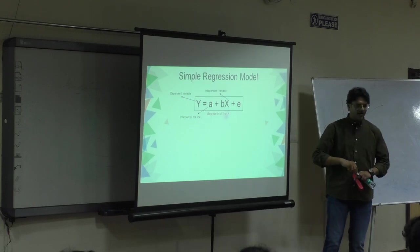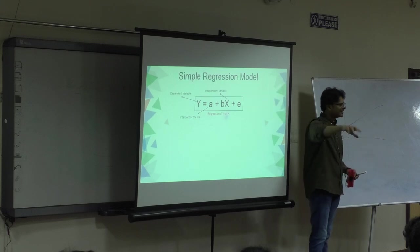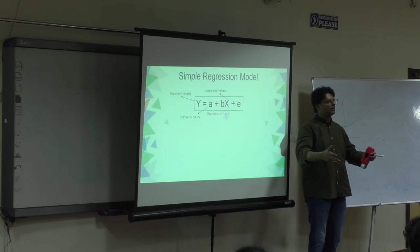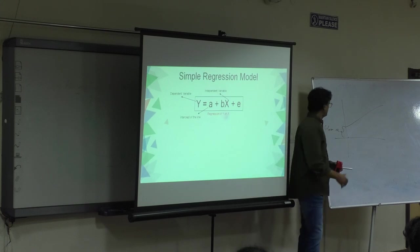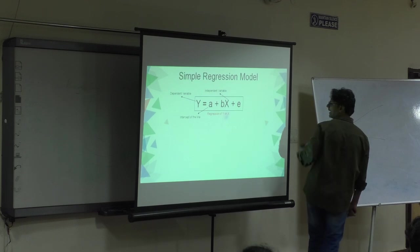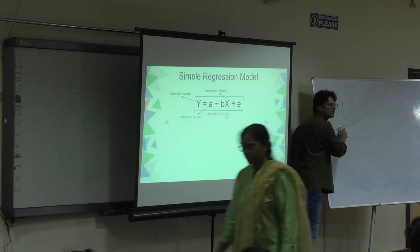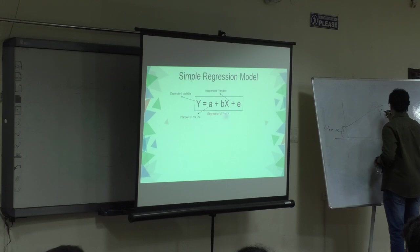So don't look at statistics in silos. Statistics is our everyday life. Statistics, first of all, it cuts across all disciplines and it also is part of our life. We unknowingly use statistics in all of our life. So, A is the intercept of this line. B is called the slope of the line.